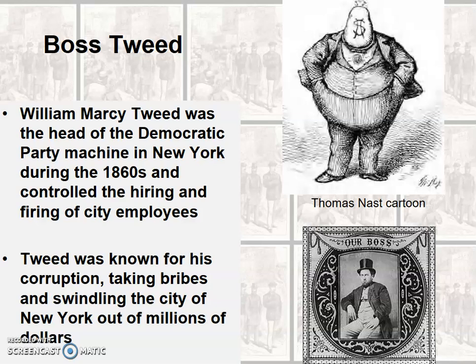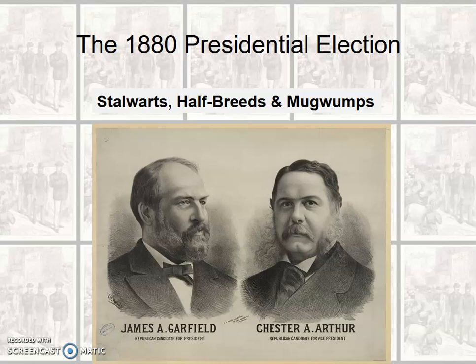Hayes' corruption did not go unnoticed by members of his own party. By the end of his term, as the 1880 election rolled around, the Republican Party was hotly debating the subject of civil service reform — the push to clean up government office and hire the best people for the job, not just those who could lie, cheat, and steal to get it. Some people were benefiting quite a bit from being bribed and thought the existing system was perfect and needed no change. Within the Republican Party, this issue would be divisive.